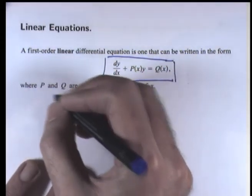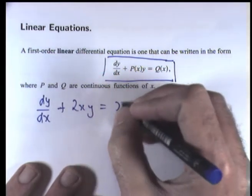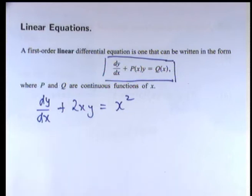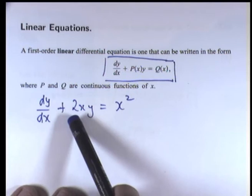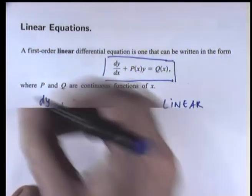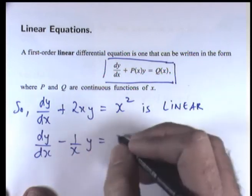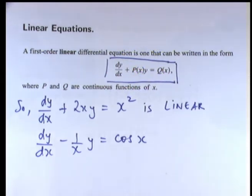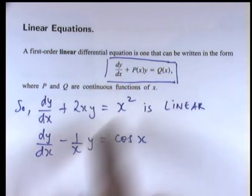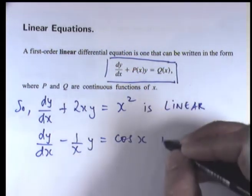To give you an example, consider this ODE. This is a linear ordinary differential equation where p of x would be 2x and q of x would be x squared. Let's look at another equation: dy/dx minus 1/x times y equals cos x. Comparing this with the standard form, p of x is minus 1/x and q of x would be cos x. So that's linear also.